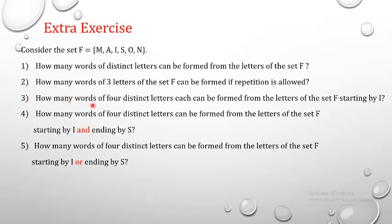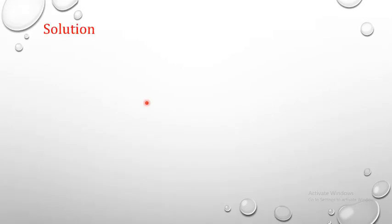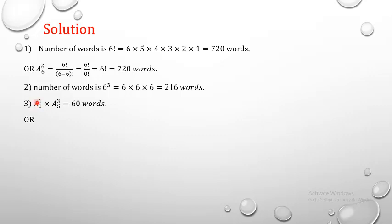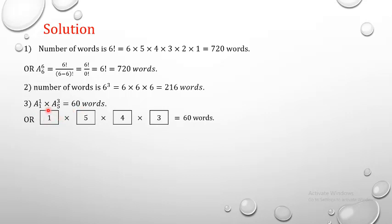Third part: how many words of 4 distinct letters can be formed from the letters of set F starting with I? We have a condition — the word must start with I, consist of 4 letters, and they must be distinct. We fix 1 letter at the first position, and the 3 remaining letters are chosen from the 5 remaining letters. Using blanks: 1 × 5 × 4 × 3 = 60 words.